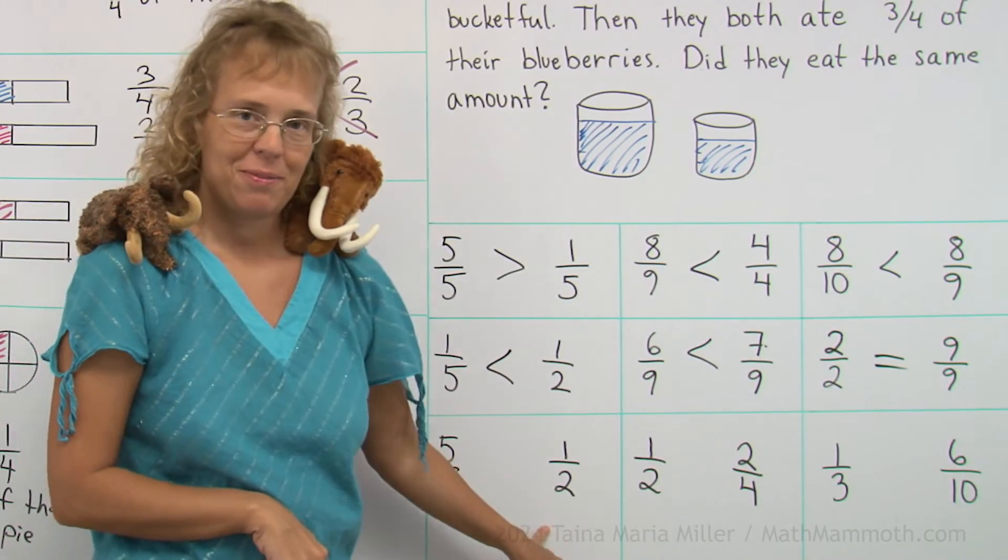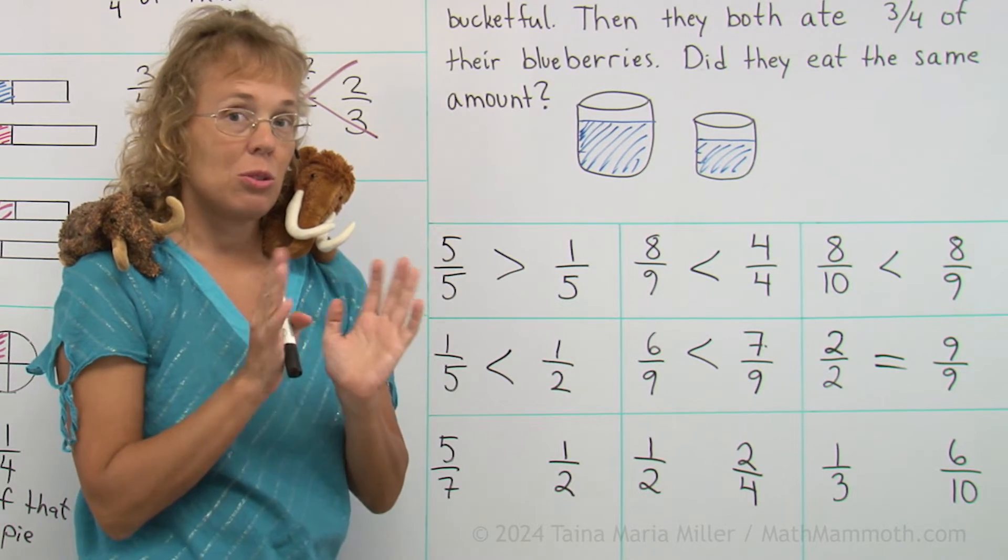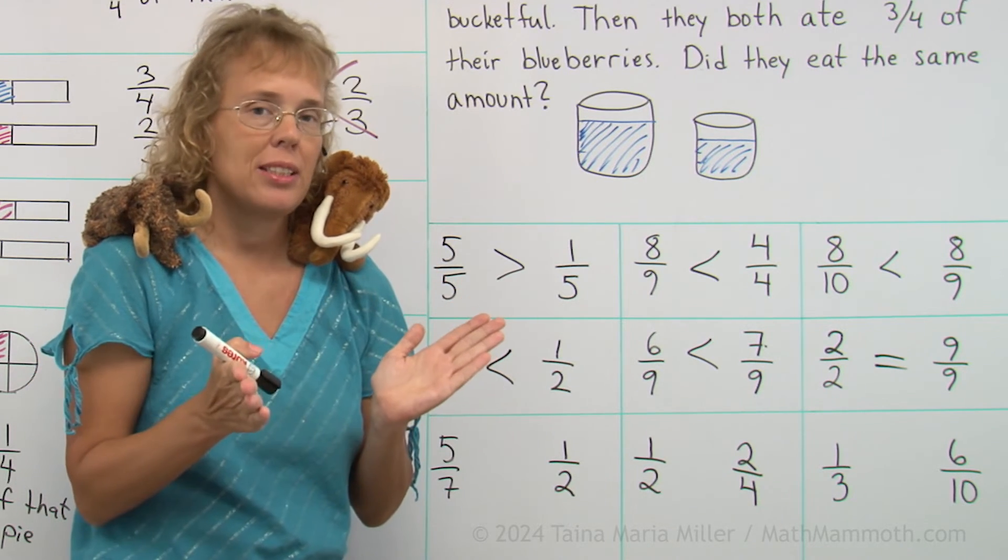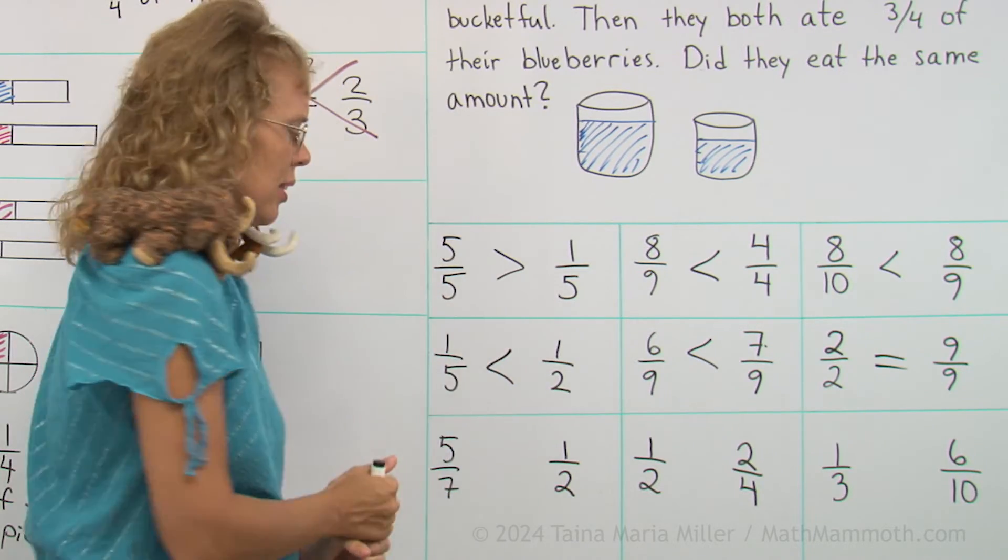Five-sevenths and one-half. Imagine if you have something divided into seven pieces and you take five pieces. That's more than one-half, isn't it? I hope you can see that.